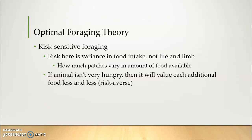When we're talking about animals that aren't very hungry or are well-fed, they're going to value each additional food unit less and less. Therefore, they prefer to forage in patches that have a low variance. For instance, if we have two areas of patches with an average food amount of eight, low variance means that all of the patches in that area are going to be around eight — maybe one higher or lower — but very close to eight.